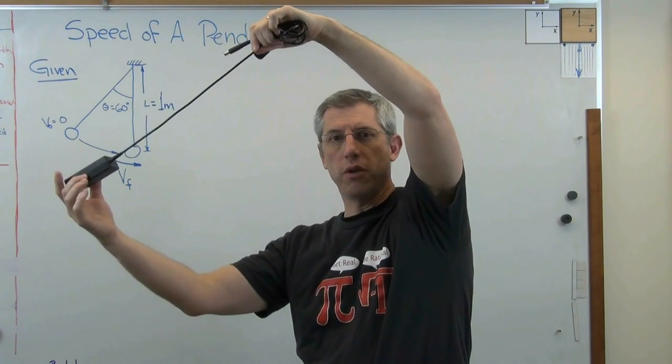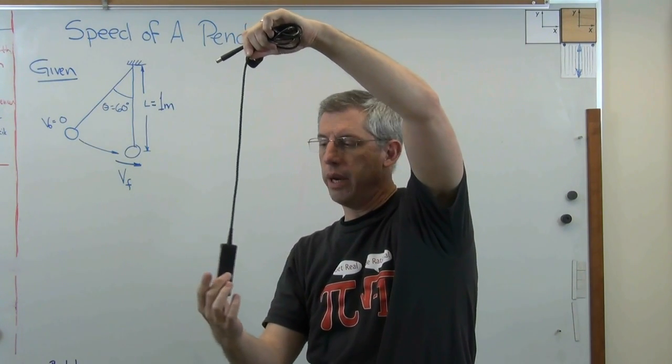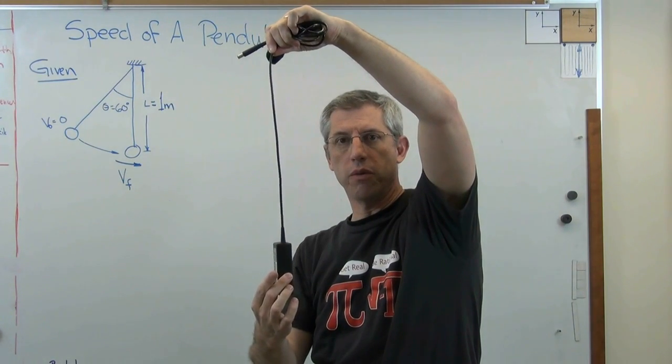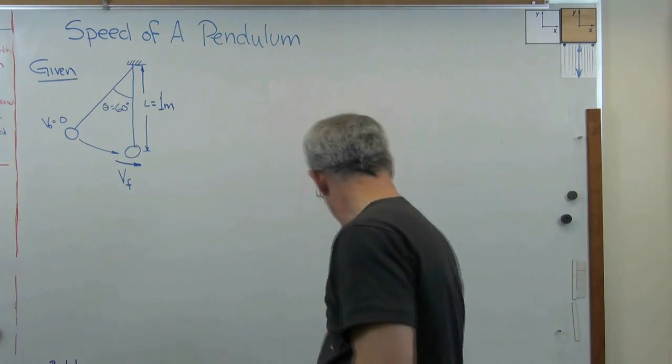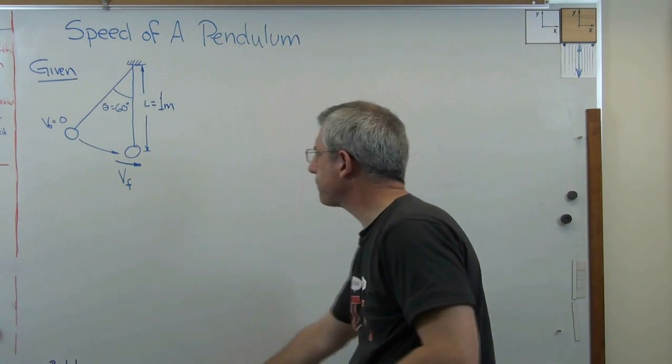So what we're doing is we have zero velocity here. Gravity will accelerate the pendulum and we'll go through the vertical here. Maximum velocity will be right there. So what is that final velocity?